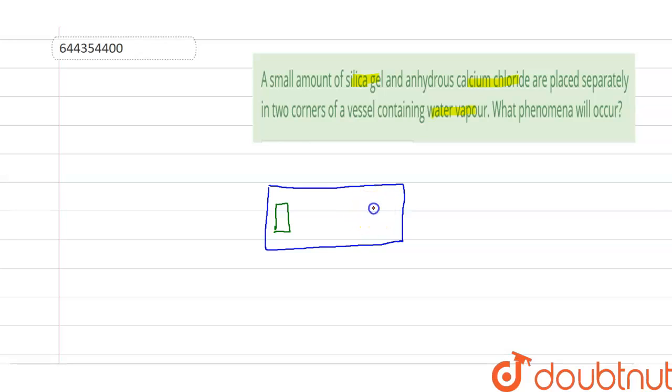And then water vapor - the vessel is containing water vapor. Let us see, this is the water vapor. So what happens? Here is the silica gel, this is calcium chloride, that is anhydrous calcium chloride.